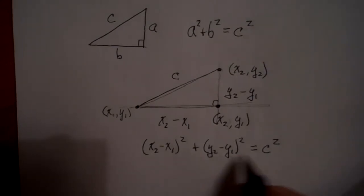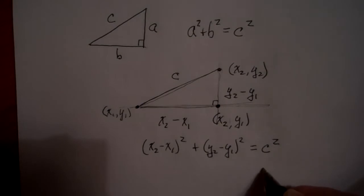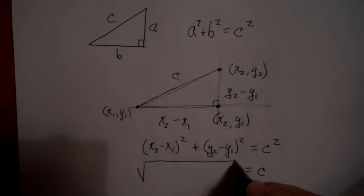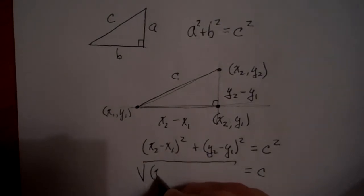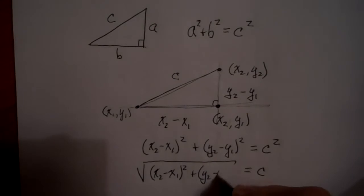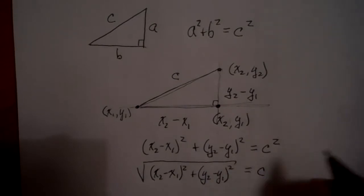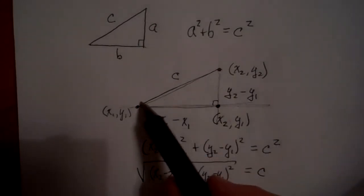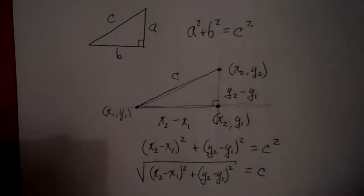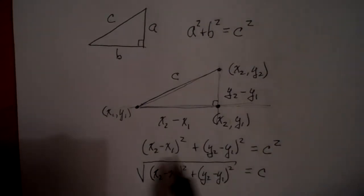That means c is equal to the square root of (x₂ − x₁)² plus (y₂ − y₁)². In other words, the distance between these two points is given by this formula — it's what we call the distance formula, and it comes directly from the Pythagorean theorem.